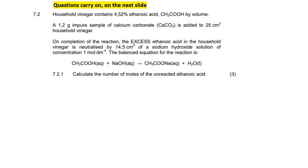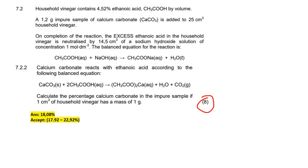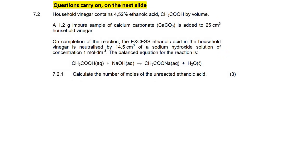Please note that this question carries on onto the next slide. We have a lovely eight-mark question. Household vinegar contains 4.52% ethanoic acid by volume. A 1.2-gram impure sample of calcium carbonate is added to 25 cm³ of household vinegar. On completion, the excess ethanoic acid in the household vinegar is neutralized by sodium hydroxide solution.